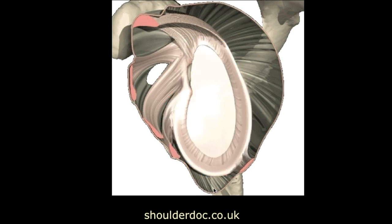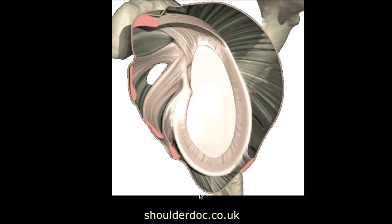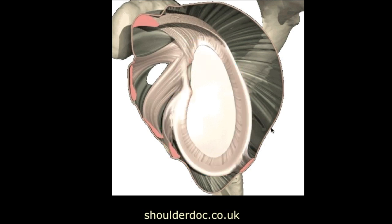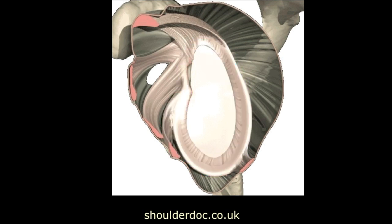Especially the inferior glenohumeral ligament has an anterior band, a posterior band, and an inferior hammock-like structure. These add to the stability of the shoulder joint. We also have the rotator cuff muscles which are not only mobilizers but also dynamic stabilizers keeping the humeral head in place.